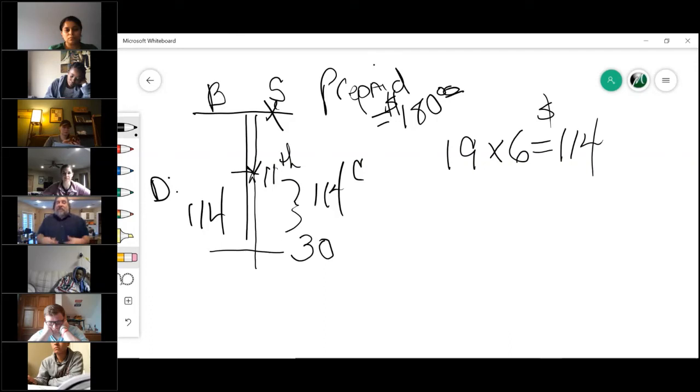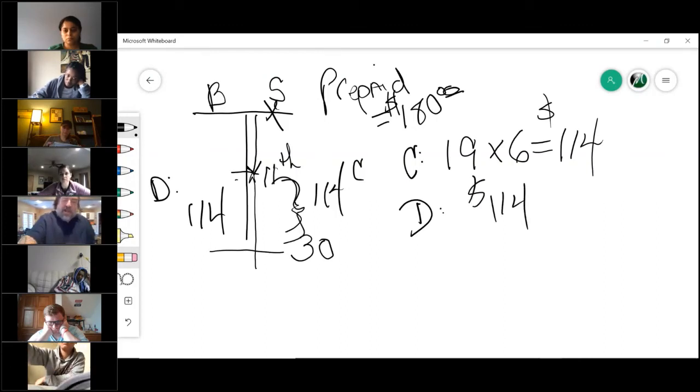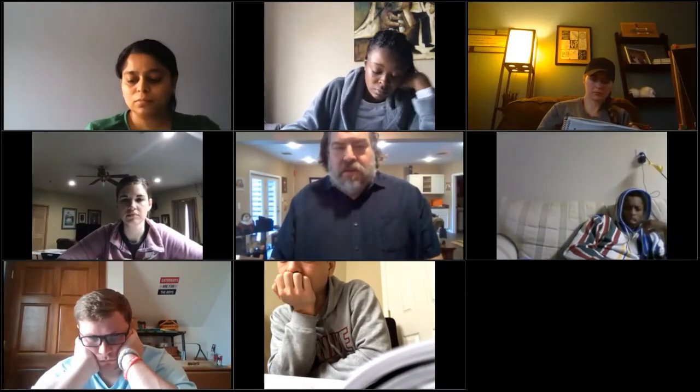So everybody see what's going on? The seller pays it here because it's prepaid, but he only uses this amount of money, so he gets back 19 days. And it's six dollars a day, is 114 dollars. Because he paid on the first 180, but day 12 through 30 he didn't own the house—the buyer owns it. So the buyer has to pay his portion. So the seller would get a credit on the closing disclosure of 114, and the buyer would get a debit of 114 to cover this amount right here that the buyer, i.e. the new owner, is using of whatever this is.